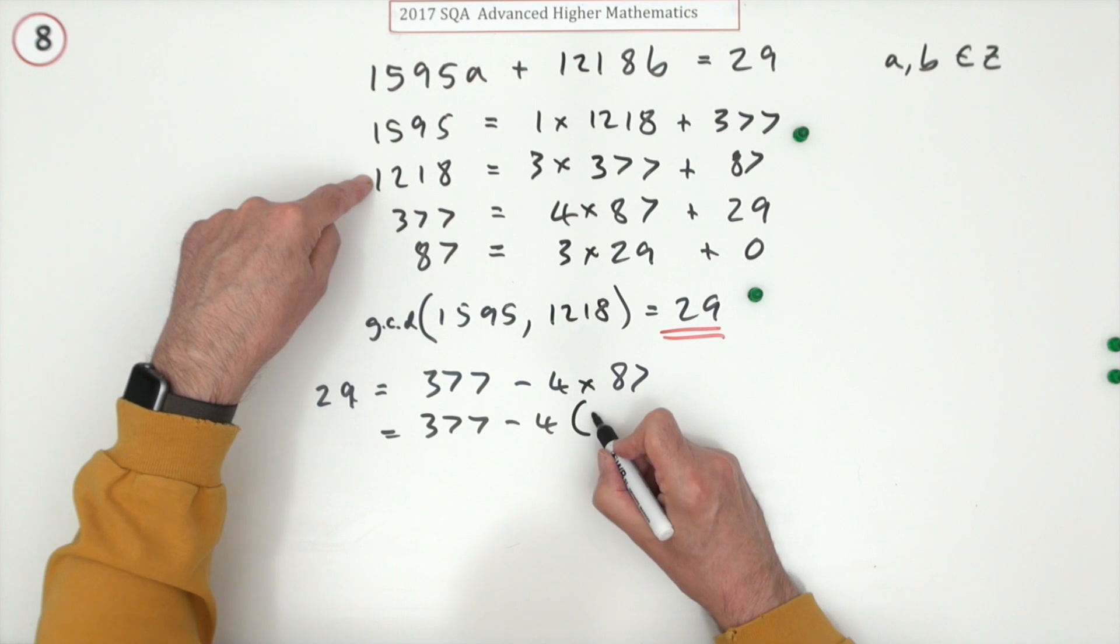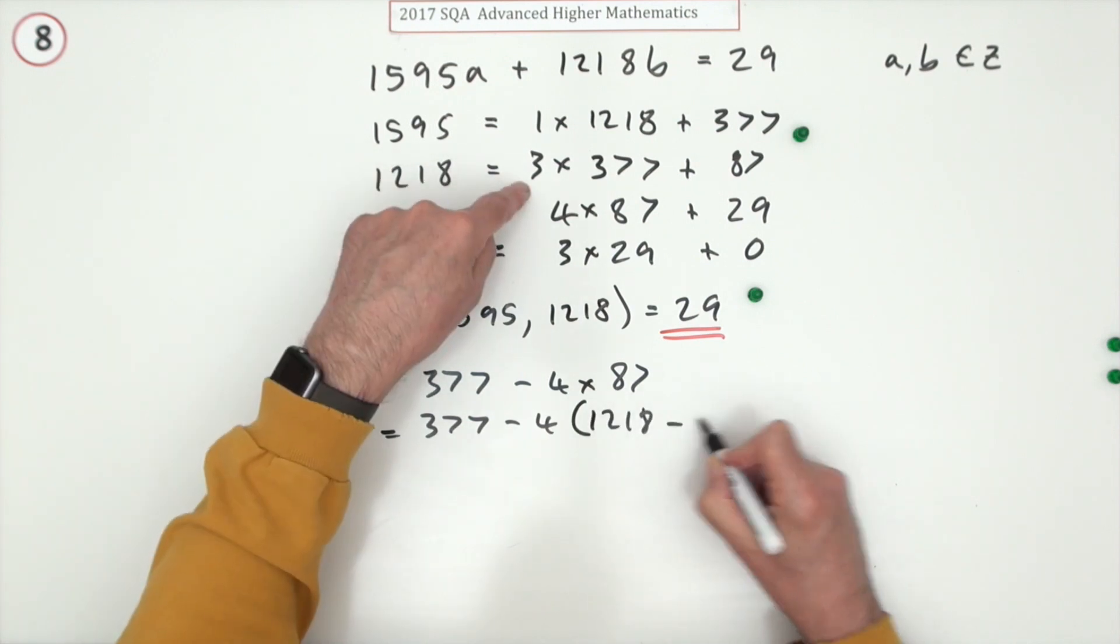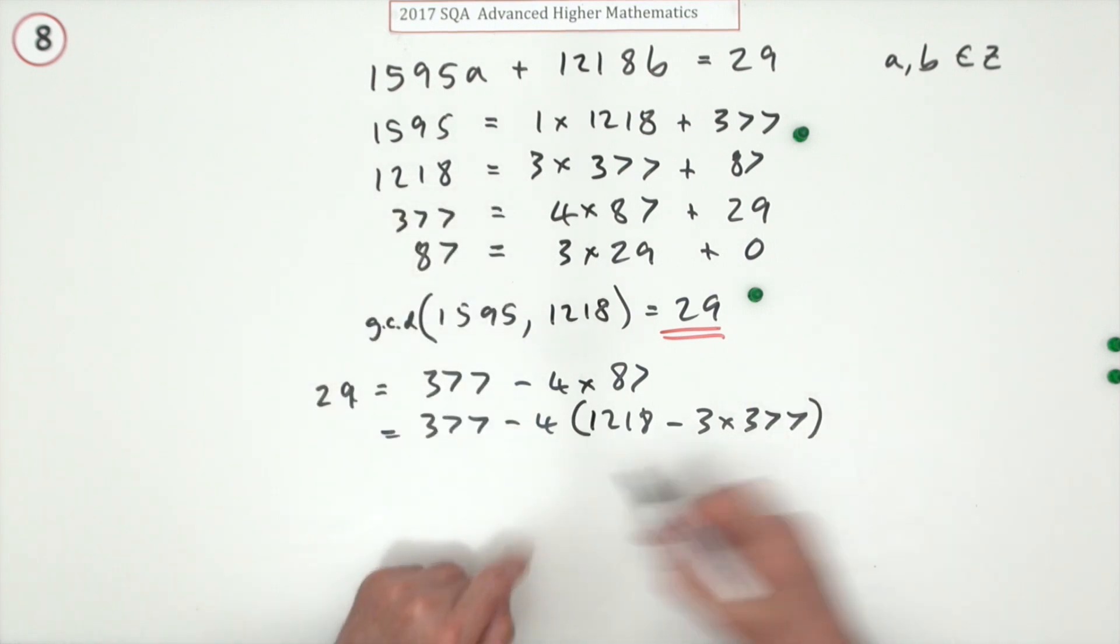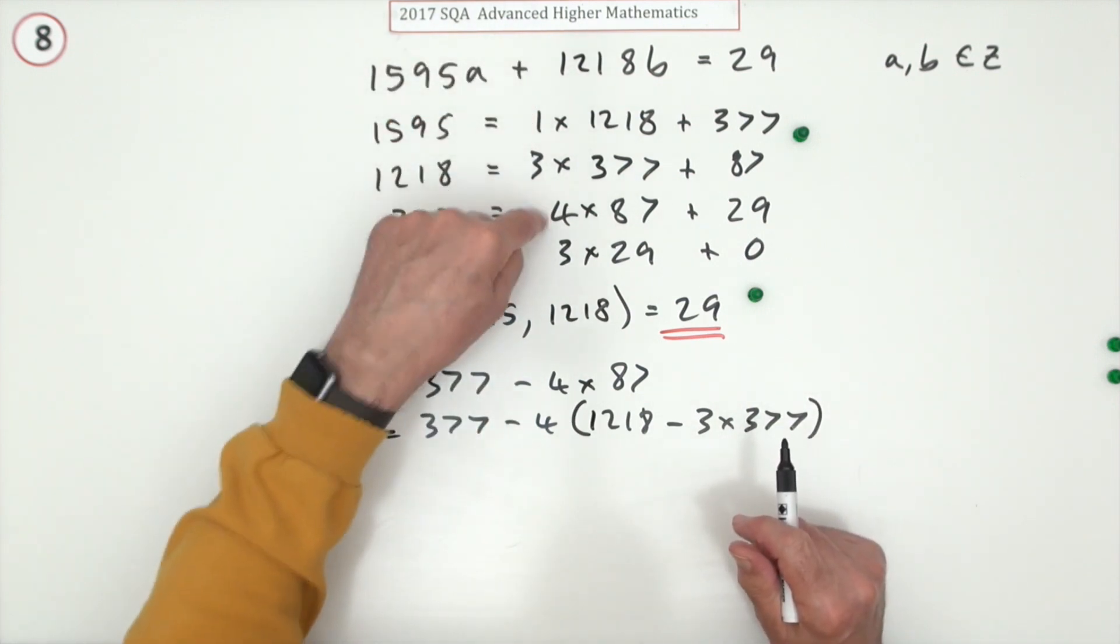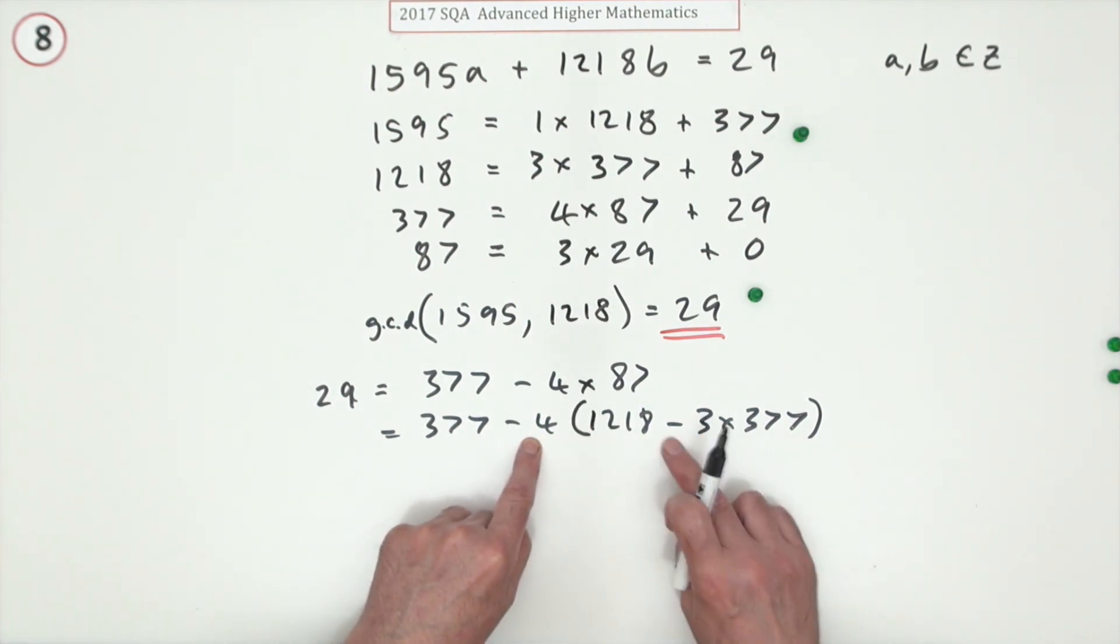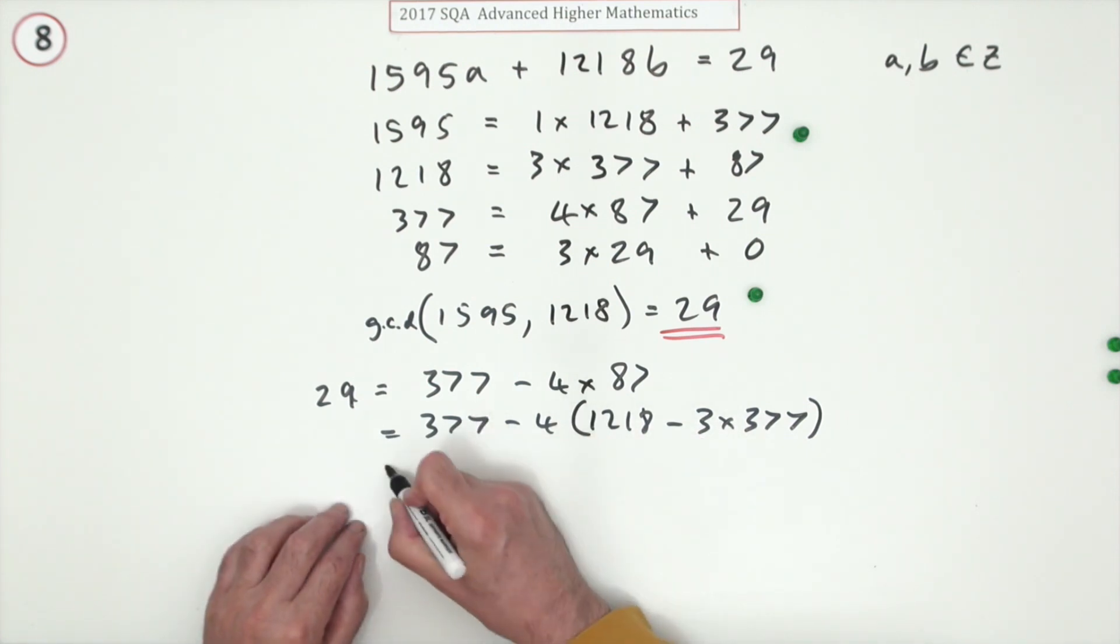Now you can step back a line and replace this 87. So that's 377 minus 4 times, and 87 can be replaced by 1218 minus 3 times 377. That's why it's handy having these multiples at the front, so it's straightforward when you go backwards through it. That's minus 4 times negative 3 making it a 12, adding on to make that 13. There's 13 lots of 377 minus 4 lots of 1218.